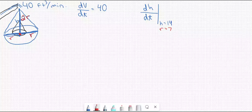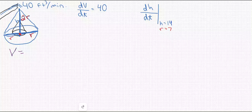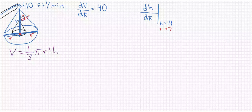It doesn't feel like a lot of information, but we still have something we know and something we want to know. We need to relate the volume to the height of the cone. We have the speed at which volume is changing, so we'll relate volume to height. The volume of a cone is (1/3)πr²h — one third pi times the square of the radius times the height.